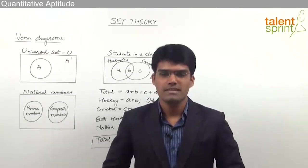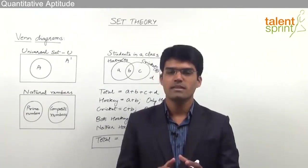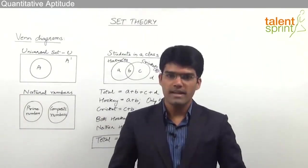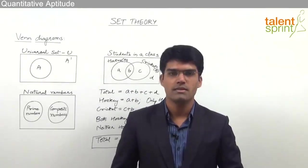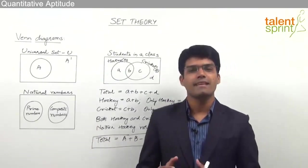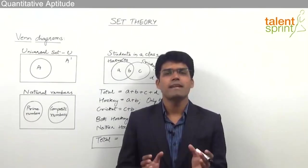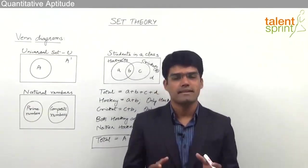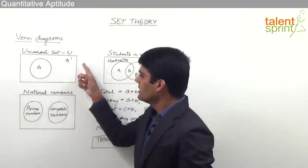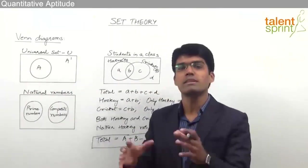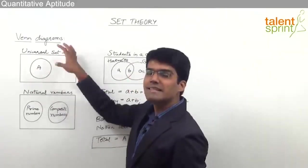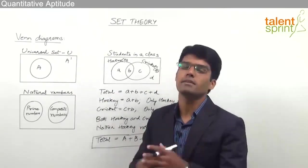After learning about sets and the various operations on them, let us now see how these operations can be represented with the help of diagrams. We use Venn diagrams or set diagrams to show all possible logical relations between a finite collection of sets. In Venn diagrams, a universal set is represented by a rectangle and a subset is represented by a circle within the rectangle.